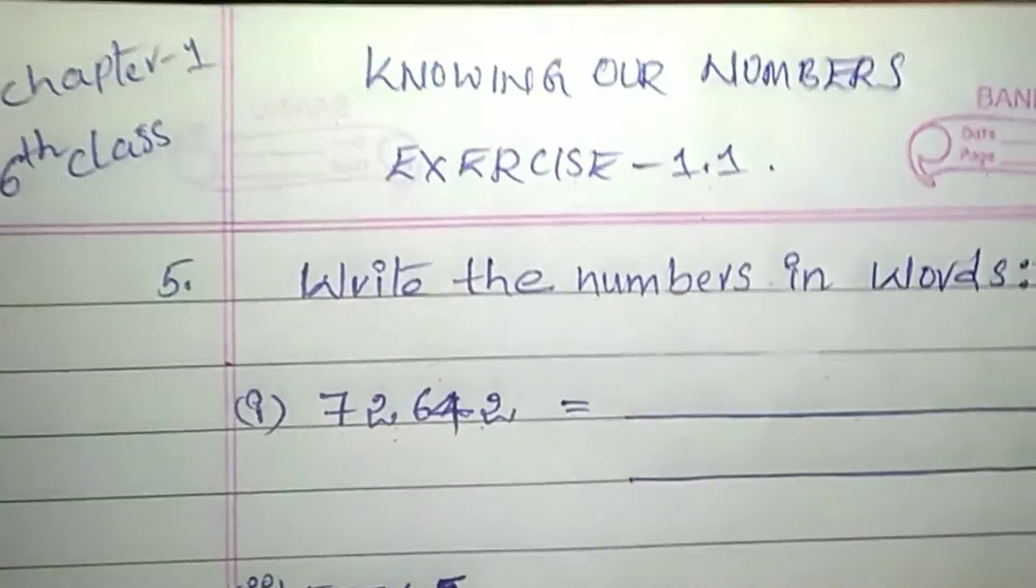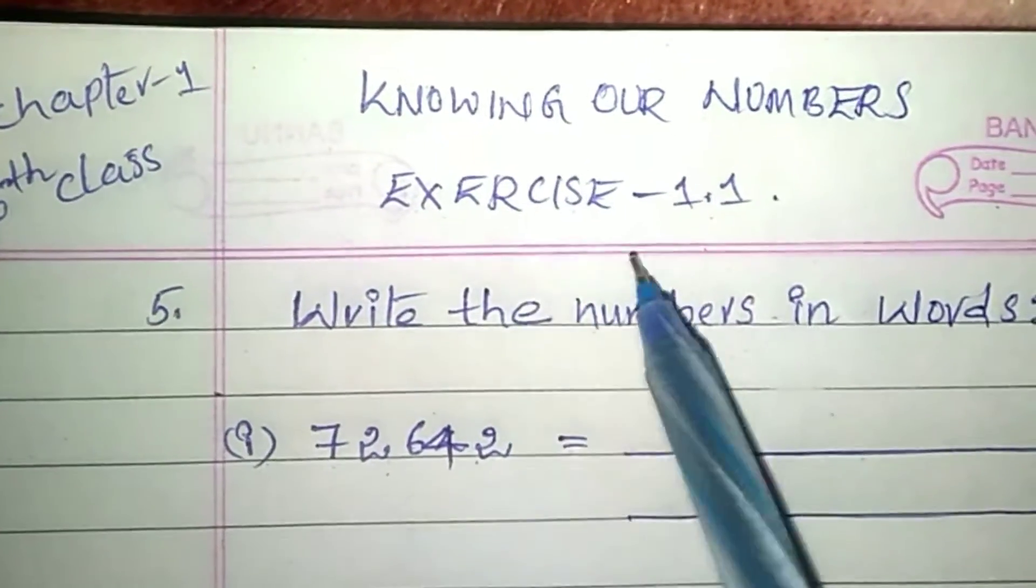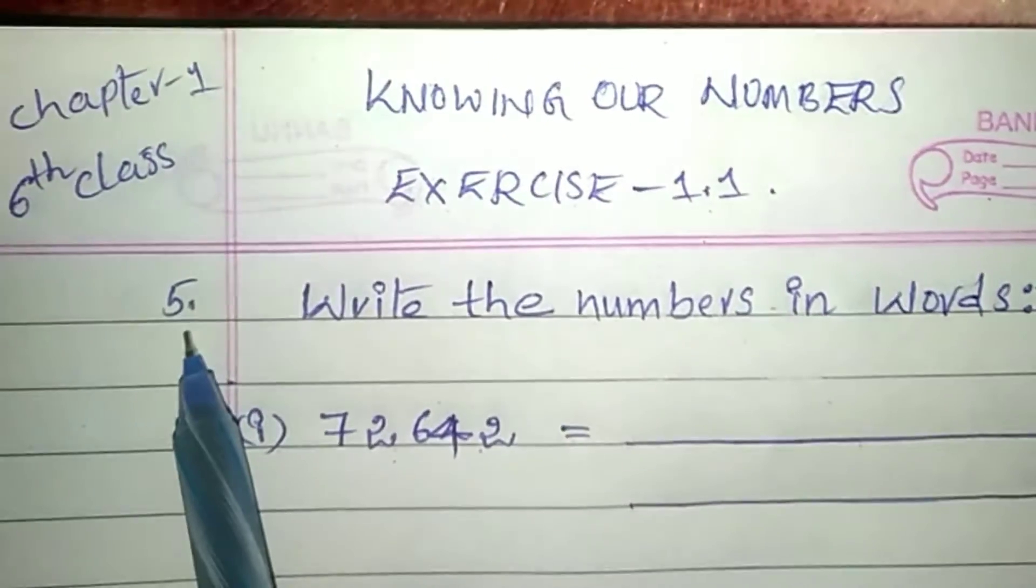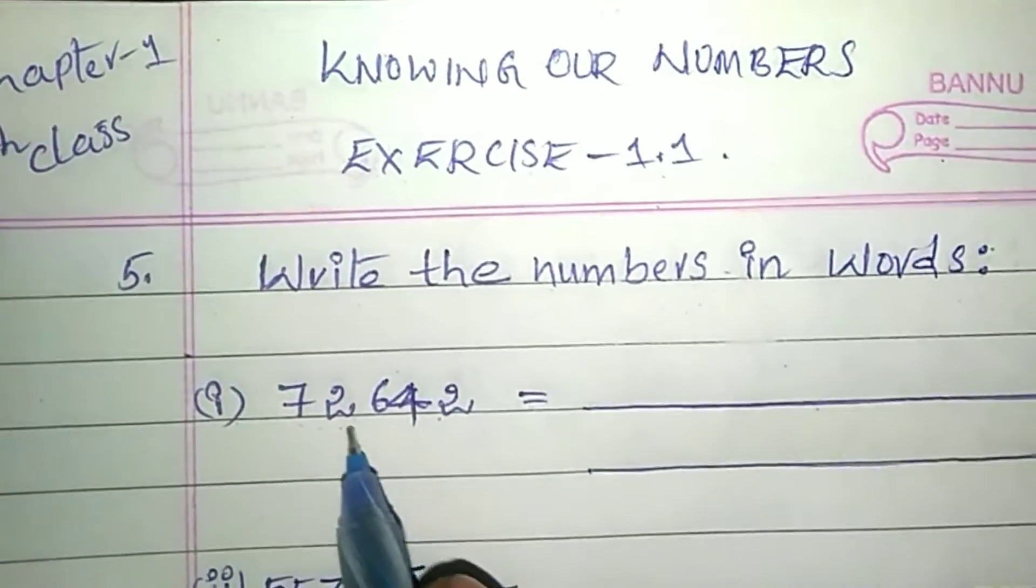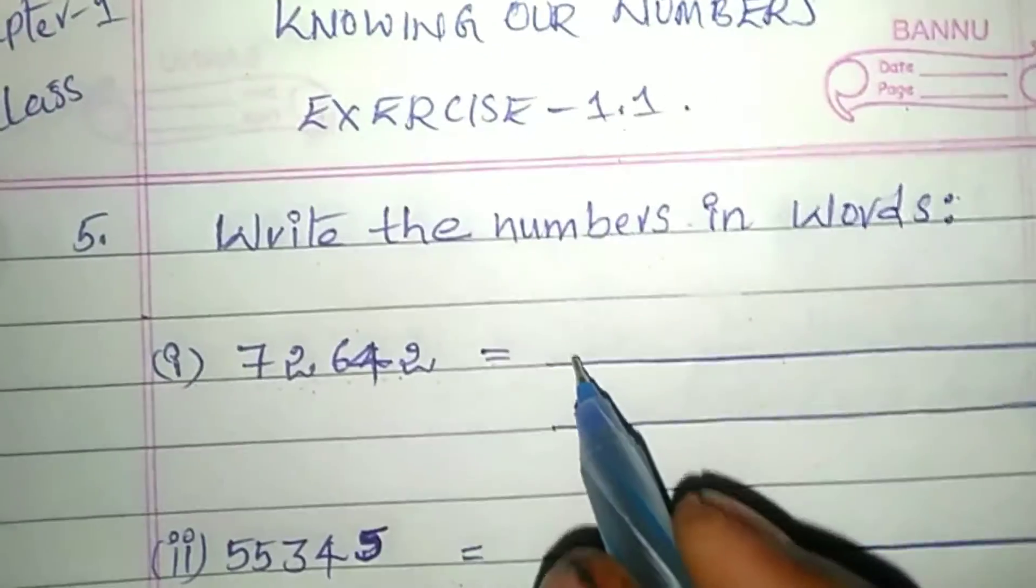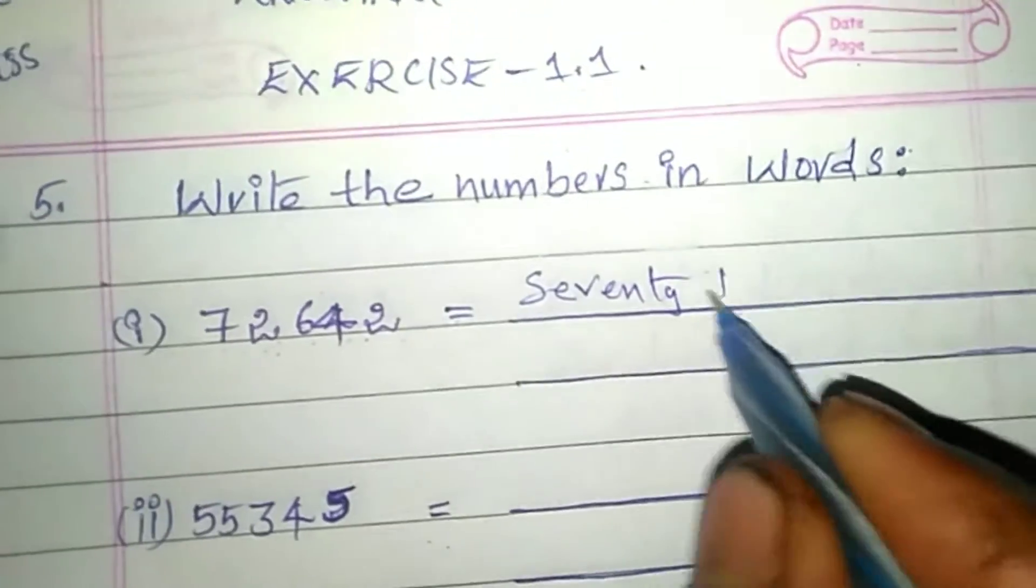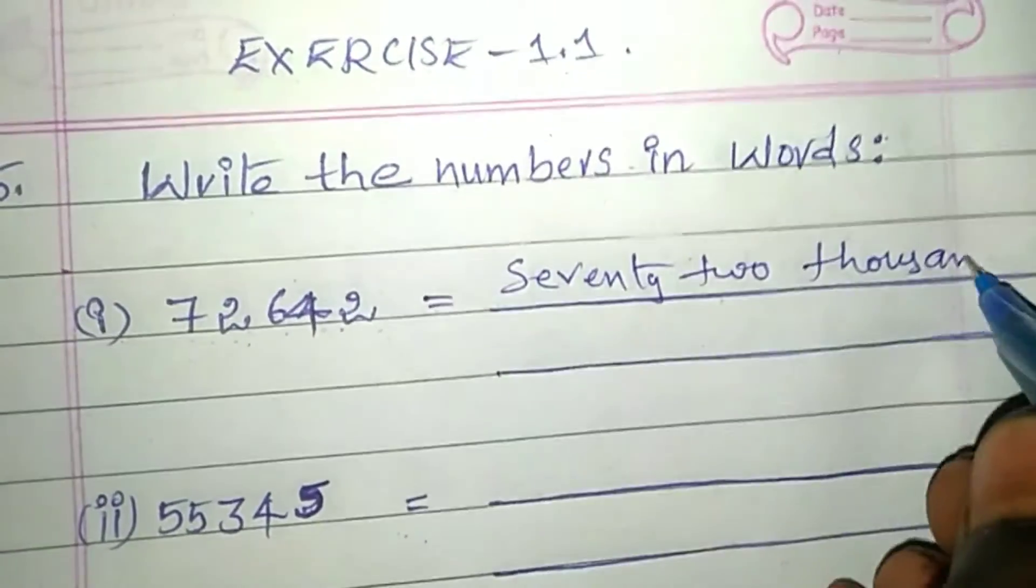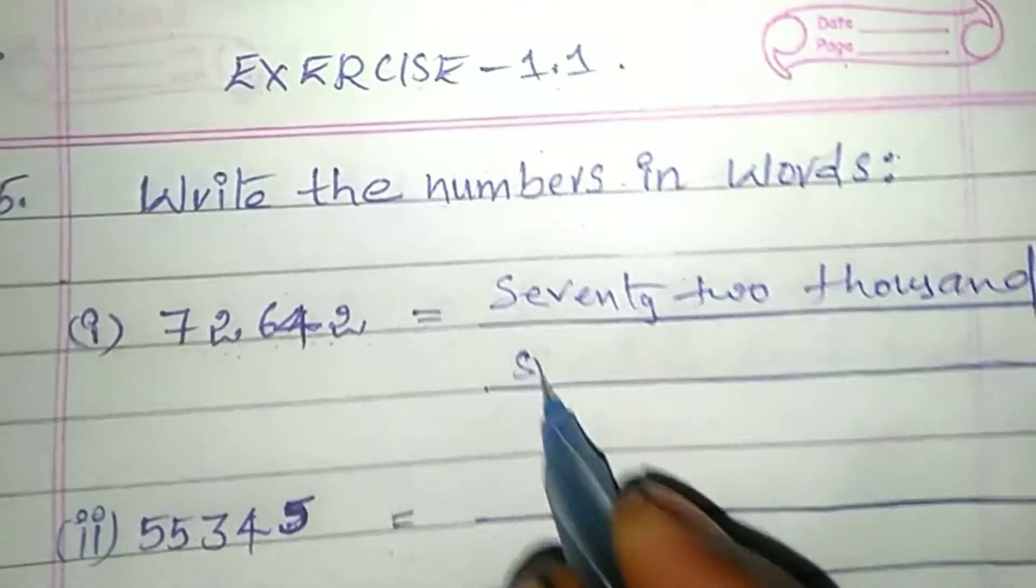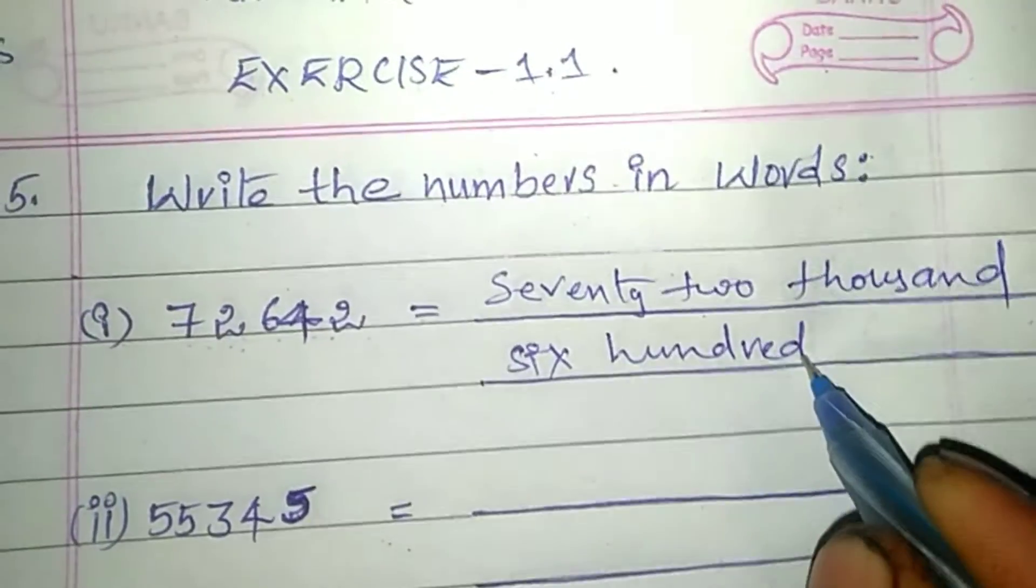Hello guys, welcome back to our channel. Today's topic is from Chapter Number 1, 6th class, Knowing Our Numbers, Exercise 1.1. The question is: write the numbers in words. First one is 72,642.